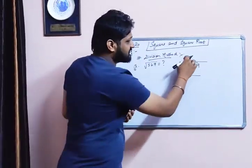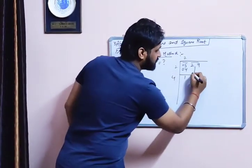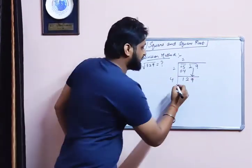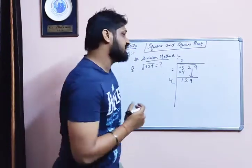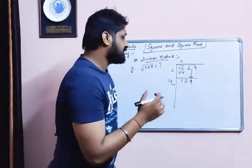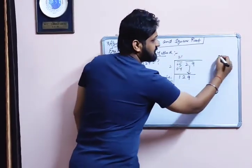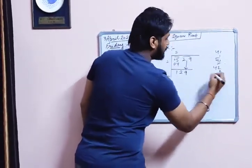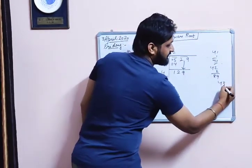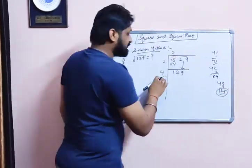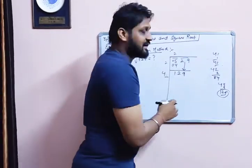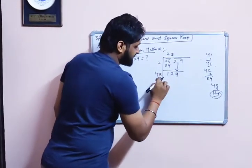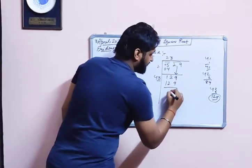Next step: we add 2 plus 2 makes 4, and we bring down the next pair — this gives us 129. Now we have to think of a digit here which comes close to that number. If we multiply 41 by 1, it gives 41. If we multiply 42 by 2, it gives 84. If we multiply 43 by 3, it gives 129. So the digit is 3, and here we will write 3.